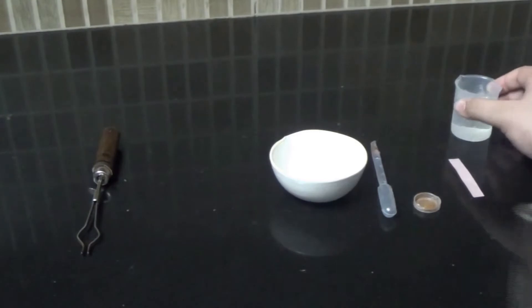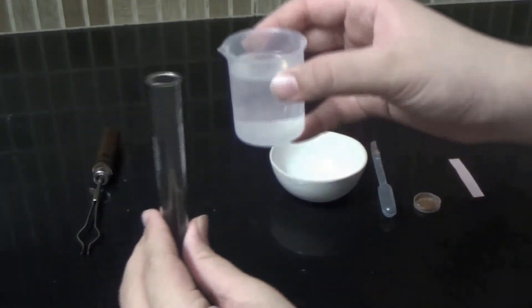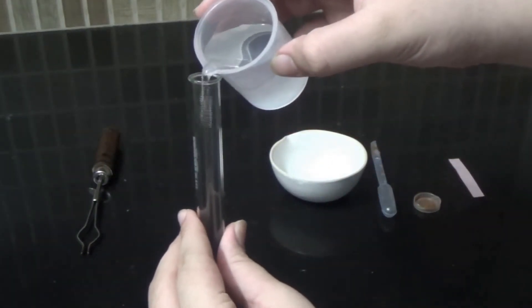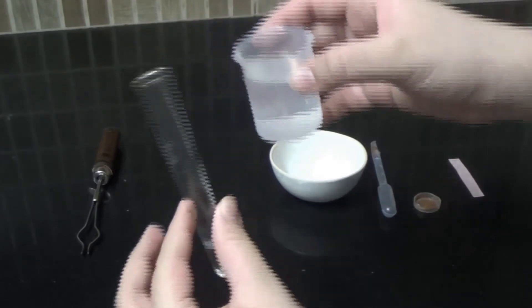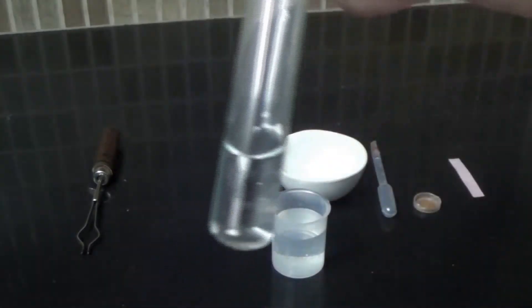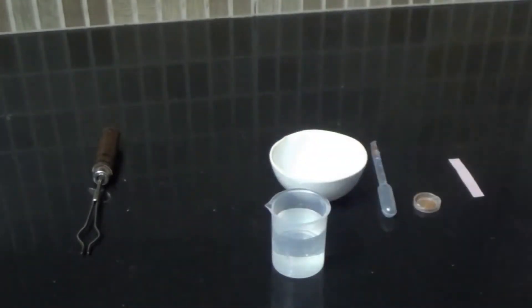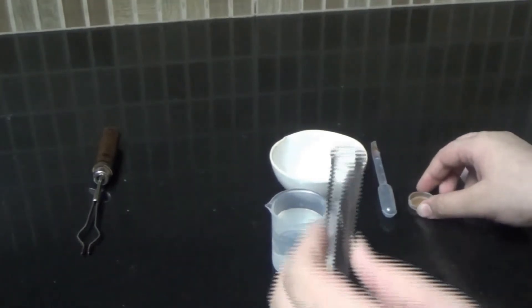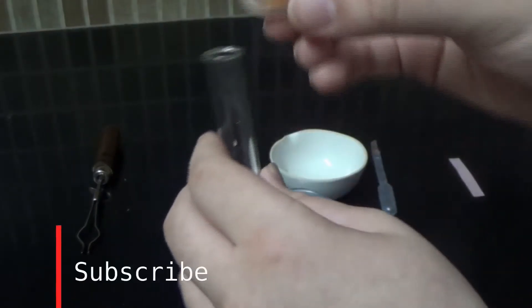Take the test tube and add water to it. Now add some rust to the same test tube and mix it thoroughly.